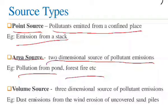An example of an area source is a forest fire, which causes air pollution. Another example is algae bloom on a lake, which is also considered an area source of pollution.